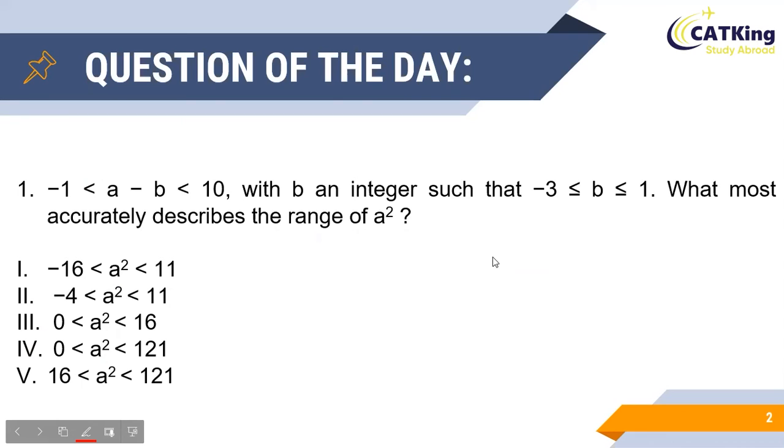As you can see, it is given to us that a minus b takes values between minus 1 and 10, and we are given that b is an integer which has values from minus 3 to 1.